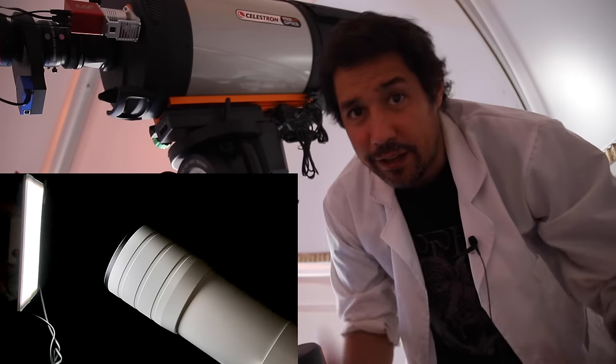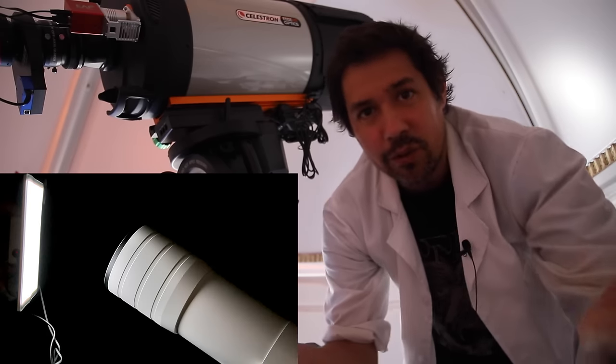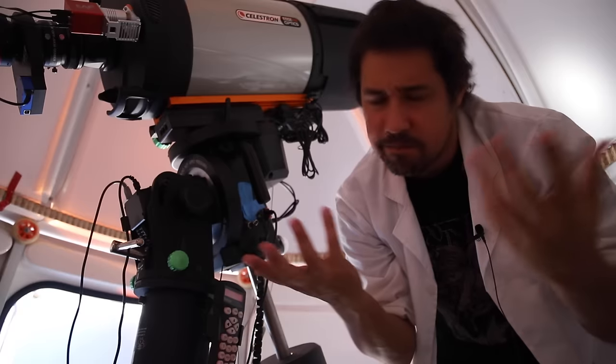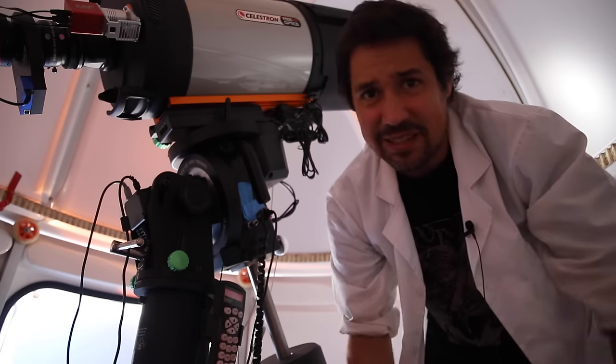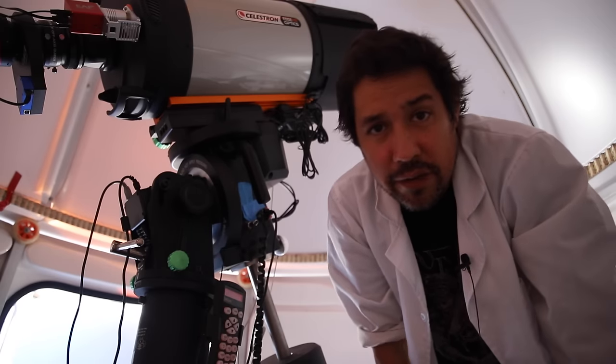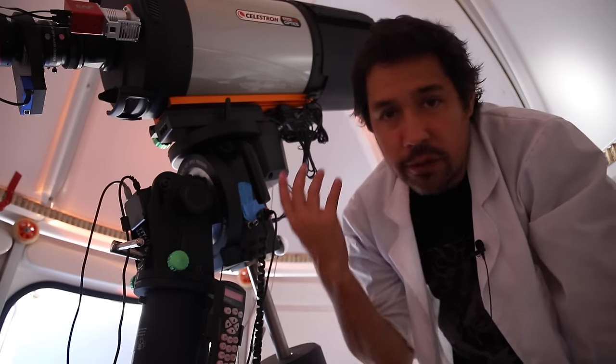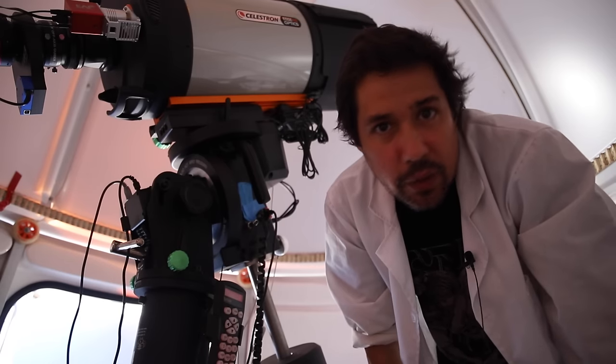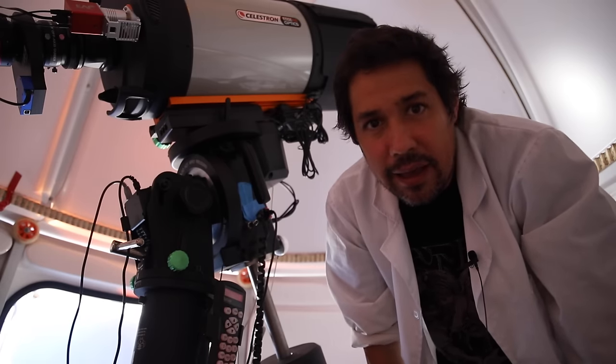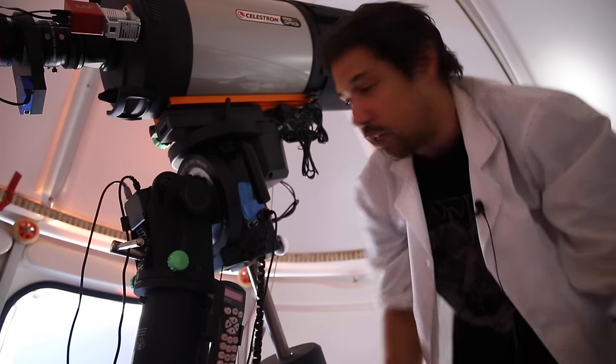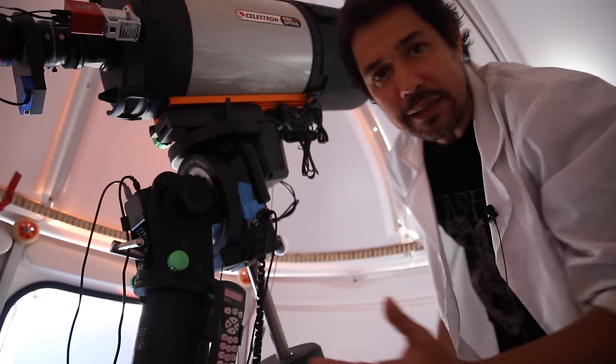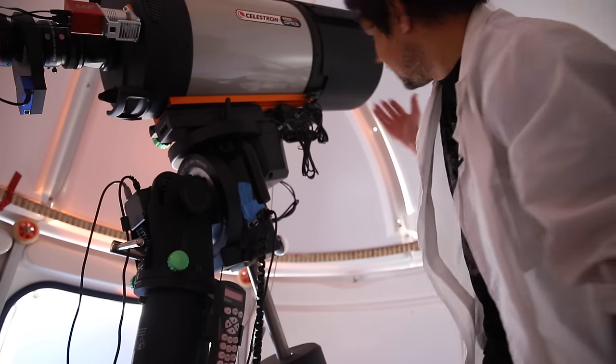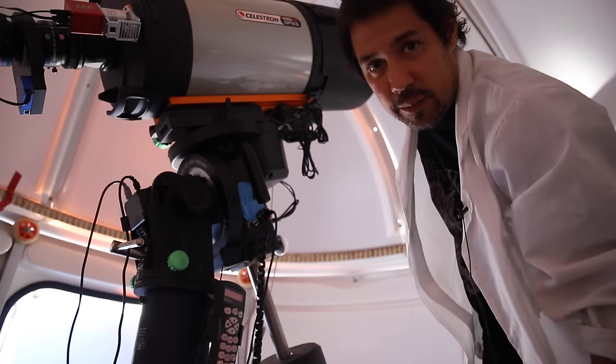You might have seen people using like light panels, like flat panels in order to illuminate what you're shooting in order to get a flat frame. And it's pretty fancy, it's total fancy pants and kind of unnecessary because you can point the telescope at a wall, you can point the telescope at a white t-shirt, you can point it at the sky. As long as you don't have too much light, it can be sort of dimly lit like this, it will be able to take those flat frames.